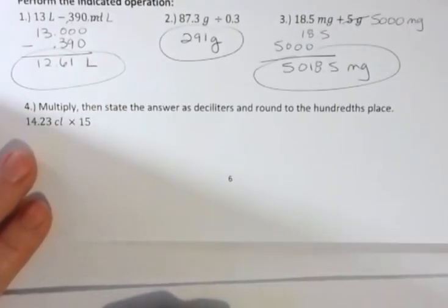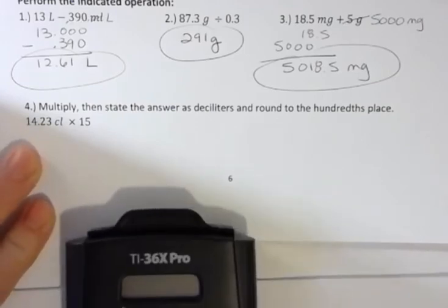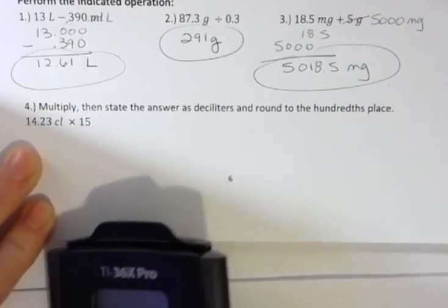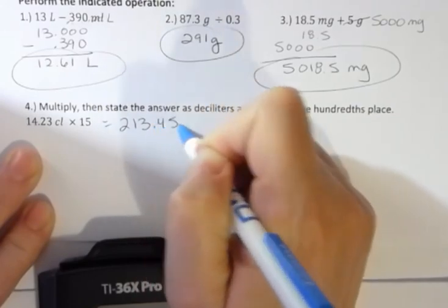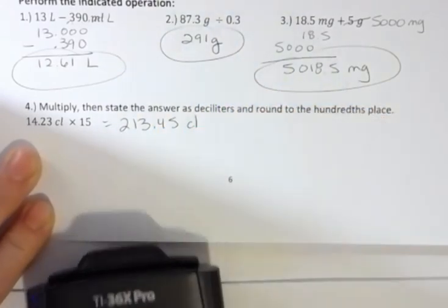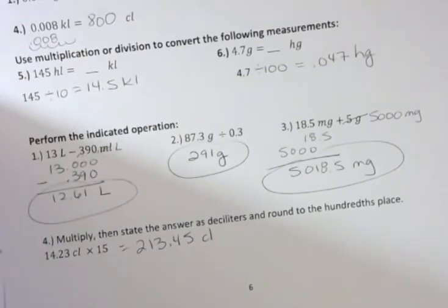And the last one says multiply, then state your answer as deciliters and round to the hundredths place. I'm just going to multiply because I have centiliters: I'm going to multiply 14.23 times 15, and that's going to give me 213.45 centiliters.